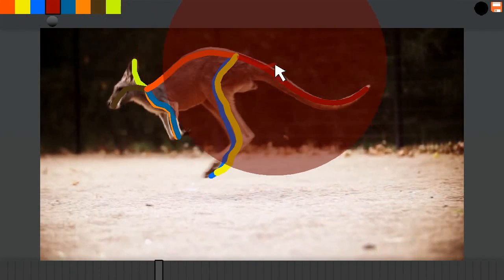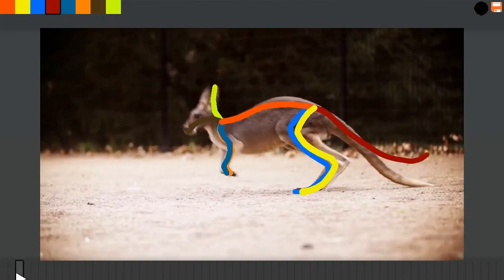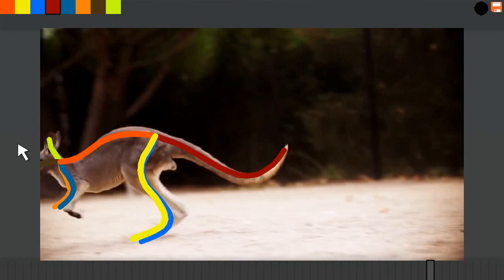Here we change the pose of the kangaroo tail. Note how the tail leaves the image plane as it was drawn shorter than its full length.